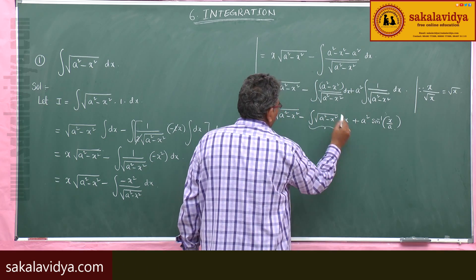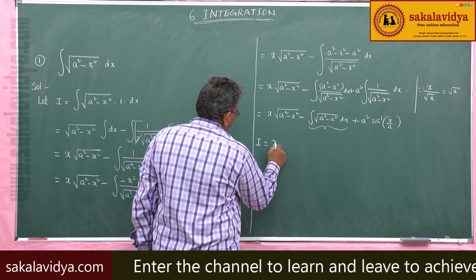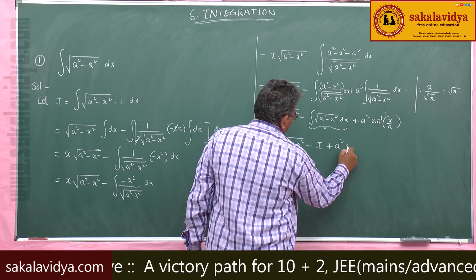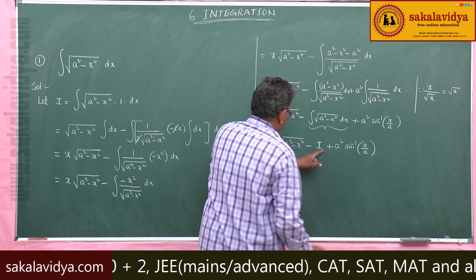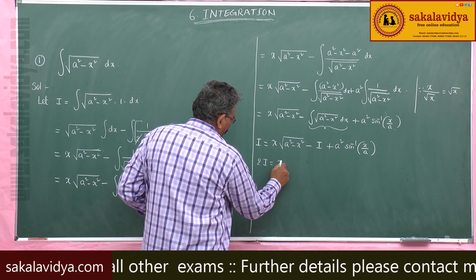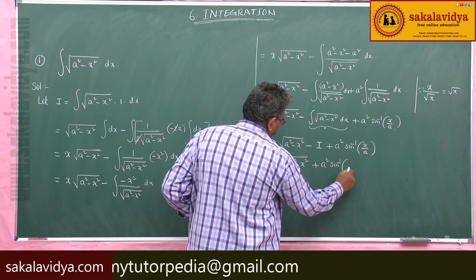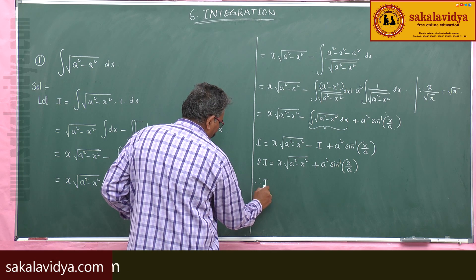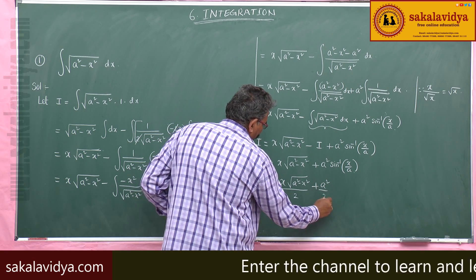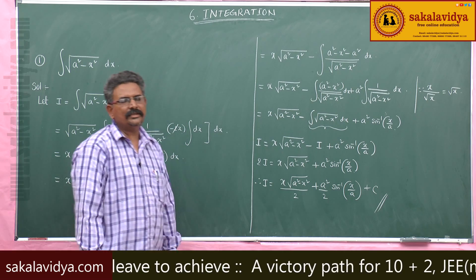The same integral i appears again. So substituting: i = x·√(a²−x²) − i + a²·sin⁻¹(x/a). Bringing −i to the left side: 2i = x·√(a²−x²) + a²·sin⁻¹(x/a). Therefore, i = (x/2)·√(a²−x²) + (a²/2)·sin⁻¹(x/a) + C. Hence the formula has been derived.